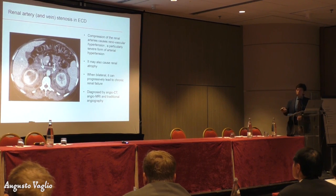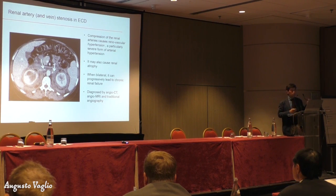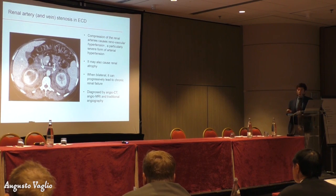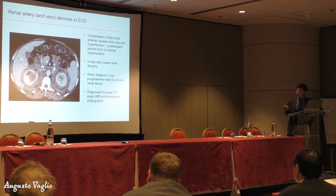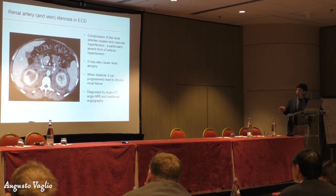But the problem is not only the ureters. This tissue involves all structures in the retroperitoneum, so it also sometimes involves the vessels — you can compress the renal arteries. This process of compression of the renal arteries causes what we call renovascular hypertension, which is arterial hypertension that is particularly severe. If you compress the arteries, the blood flow to the kidneys is reduced and the kidneys can develop atrophy and chronic renal failure. This complication, often overlooked in patients with ECD, must be actively looked for and can be easily diagnosed by angio-CT, angio-MRI, or traditional angiography.